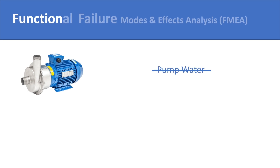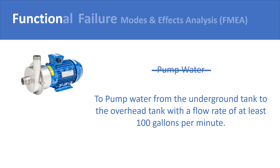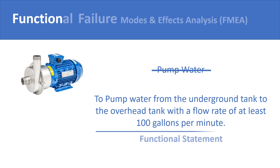In FMEA, the function of a machine has to be described in detail by describing exactly what the machine needs to do. Moreover, you also have to specify the performance standards. For example, a pump's function will be to pump water from the underground tank to the overhead tank with a flow rate of at least 100 gallons per minute. This is a functional statement in the context of FMEA — it clearly describes what the pump needs to do and lays down the performance standards expected from it.